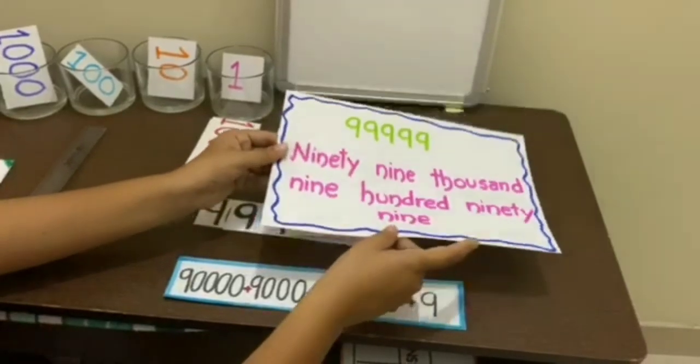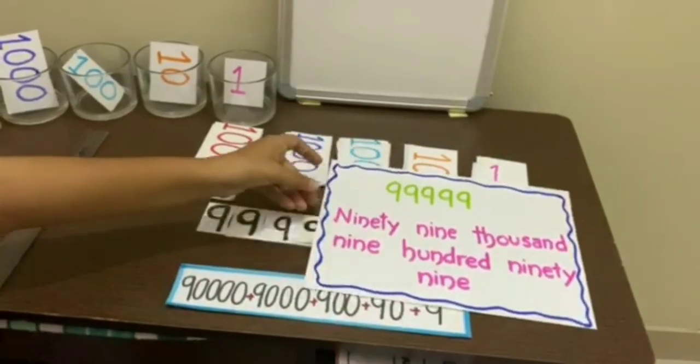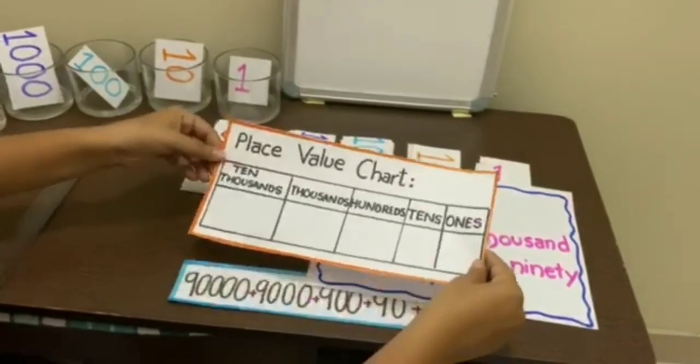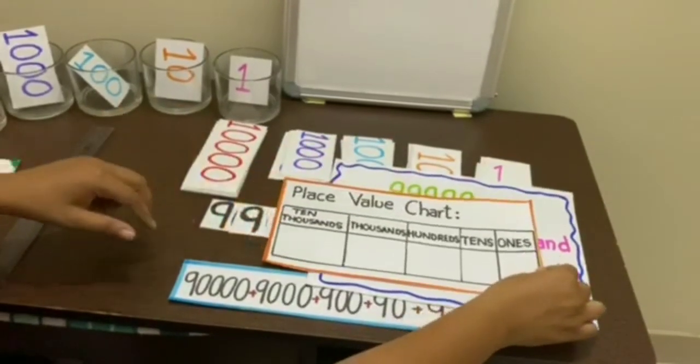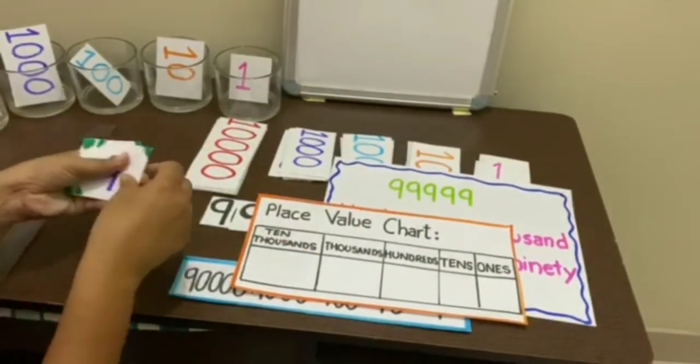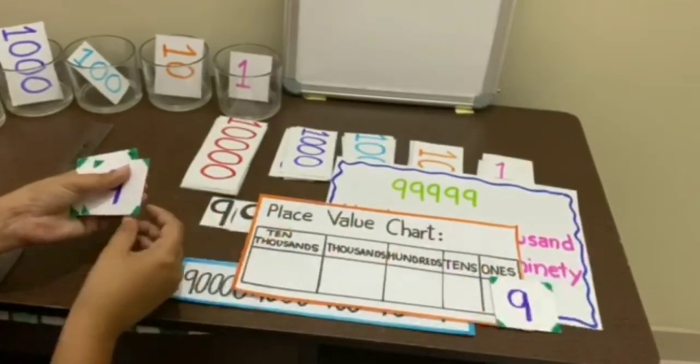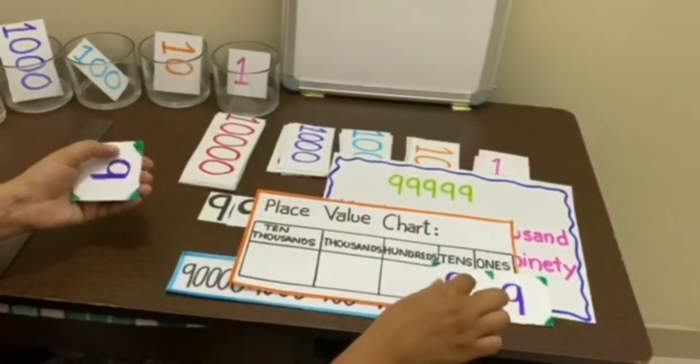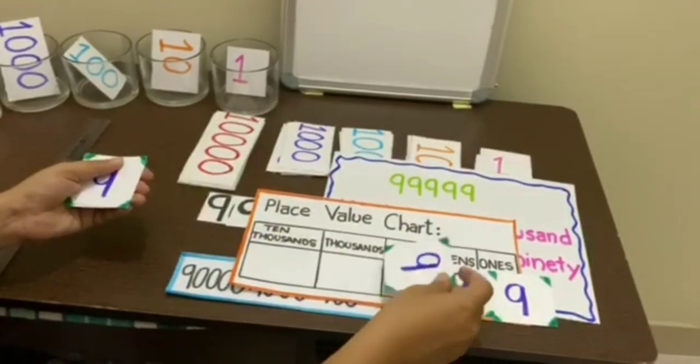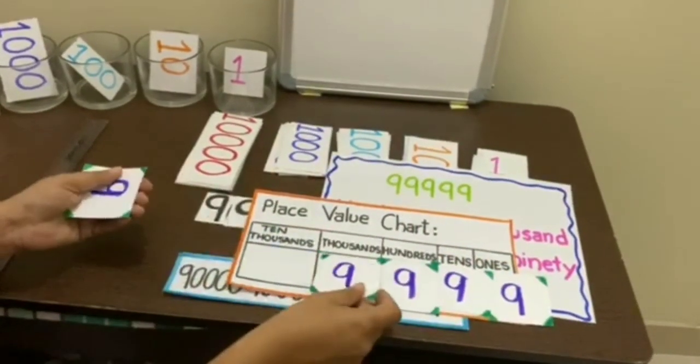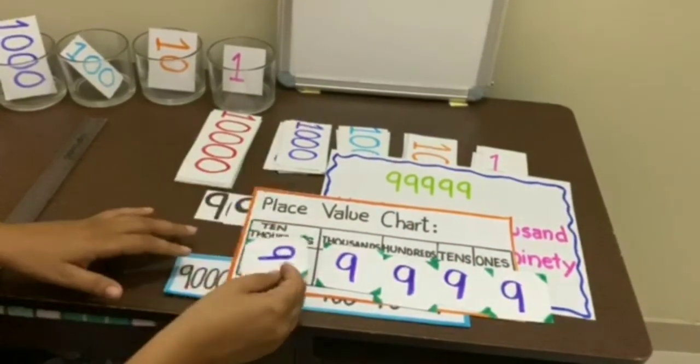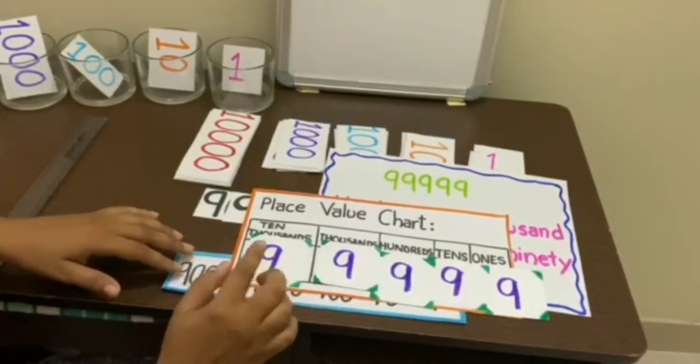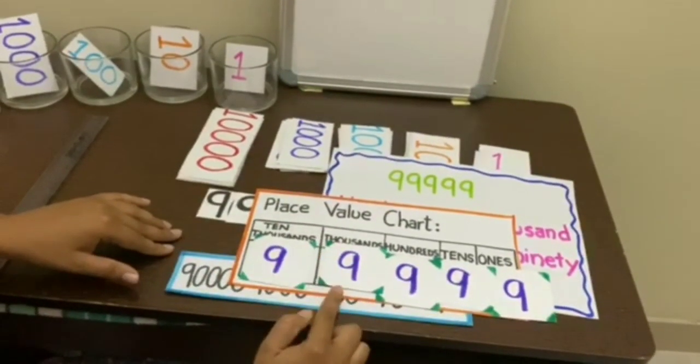Now if we display this figure on a place value chart, we will have 9 at ones place, 9 at tens place, 9 at hundreds place, 9 at thousands place, and 9 at ten-thousands place, which means 99,999.